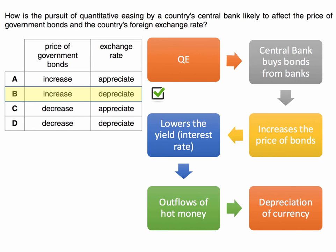Quantitative easing is when the central bank goes into the markets and typically buys government bonds — for example, from the banking system. It's a net buyer of bonds, and this increases the price of bonds in the open market because the central bank is an extra buyer.